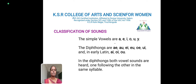Something called diphthongs — combinations like A-E, A-E, O-E — and in early Latin, A, E, O, E, O. These sounds are diphthongs. In diphthongs, both vowel sounds are heard, one following the other in the same syllable.